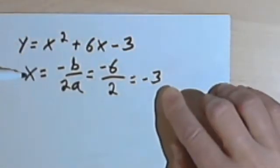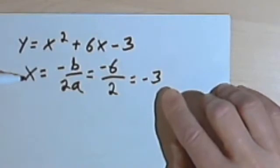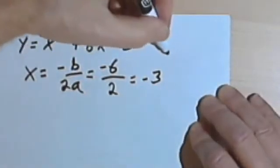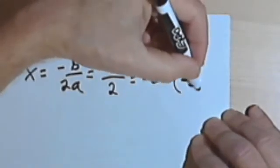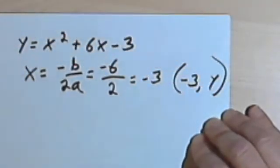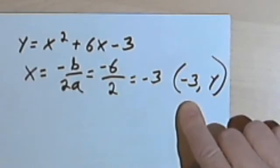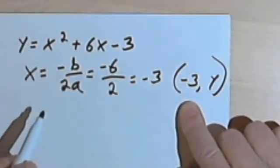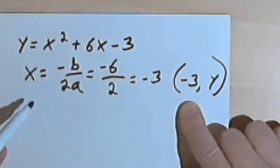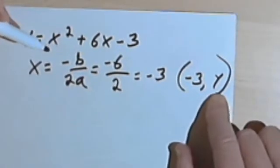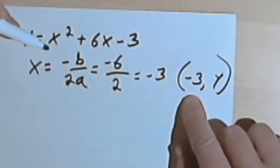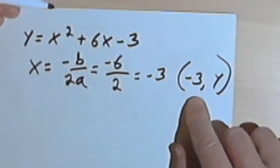So now I know that my x-coordinate is negative 3. So I'm going to have an ordered pair that begins with a negative 3 and then there's going to be the y-coordinate. I don't know what the y-coordinate is. Remember, in an equation, when you're trying to find out what a y-value is, if you have the x-value, you just plug the x-value in.